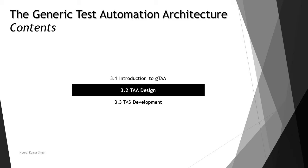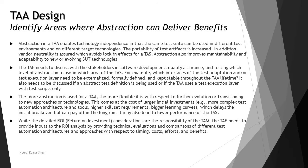In continuation with the previous tutorial, we are talking about Test Design — that is Test Automation Architecture Design — where we are identifying areas where abstraction can deliver benefits. There are certain considerations which we take into account as part of this design. The very first thing we are trying to understand from the point of abstraction is what abstraction is basically going to help you with.